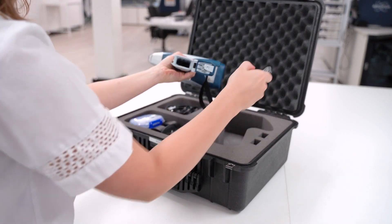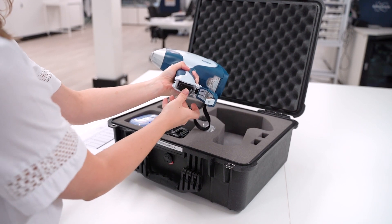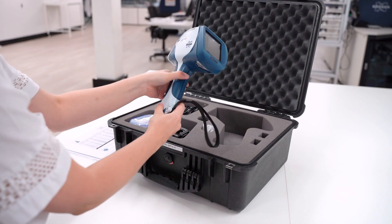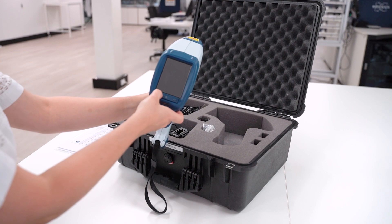First things first, we're giving the instrument some power. So we're inserting a charged battery or a mains power cord. Press the power button to turn it on and the login screen will appear.